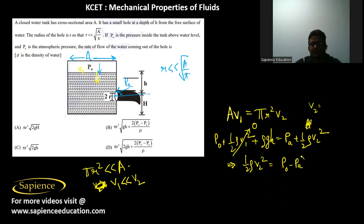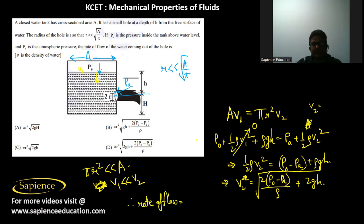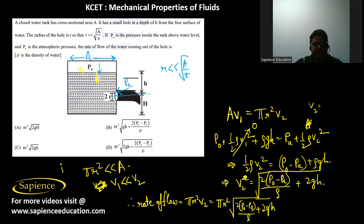From the simplified Bernoulli equation: ½ρv₂² = (P₀ − pA) + ρgh. Therefore v₂² = 2(P₀ − pA)/ρ + 2gh, so v₂ = √(2(P₀ − pA)/ρ + 2gh). The volume flow rate is πr²·v₂ = πr²·√(2(P₀ − pA)/ρ + 2gh). So option D is the correct answer.